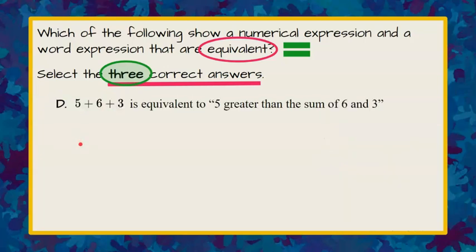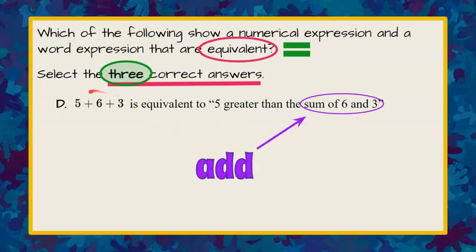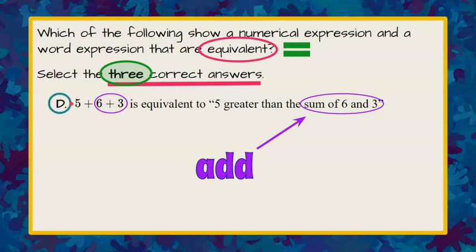Now choice D. Five plus six plus three — is it equivalent to 'five greater than the sum of six and three'? Sum of six and three means to add six plus three. 'Five greater than' means five more than, an additional five added to that sum. So six plus three, and then an additional five — that checks out. Choice D is also correct.